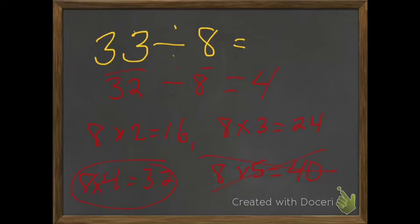Because 32 is a compatible number to 8, because 8 can go into 32 equally. So let's go to the next one here.